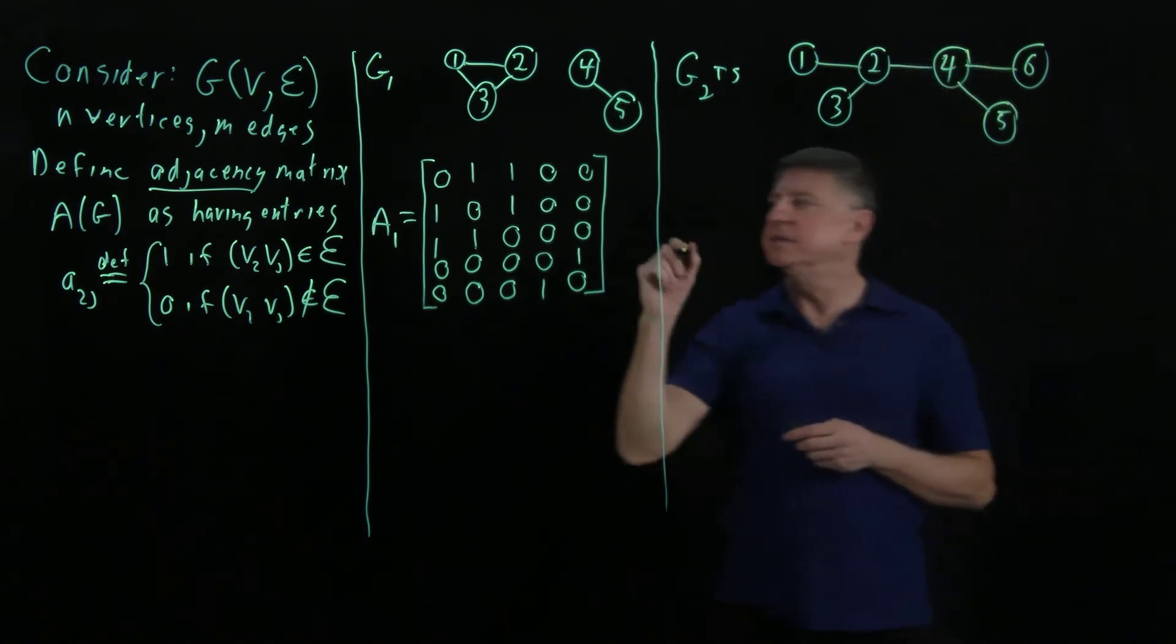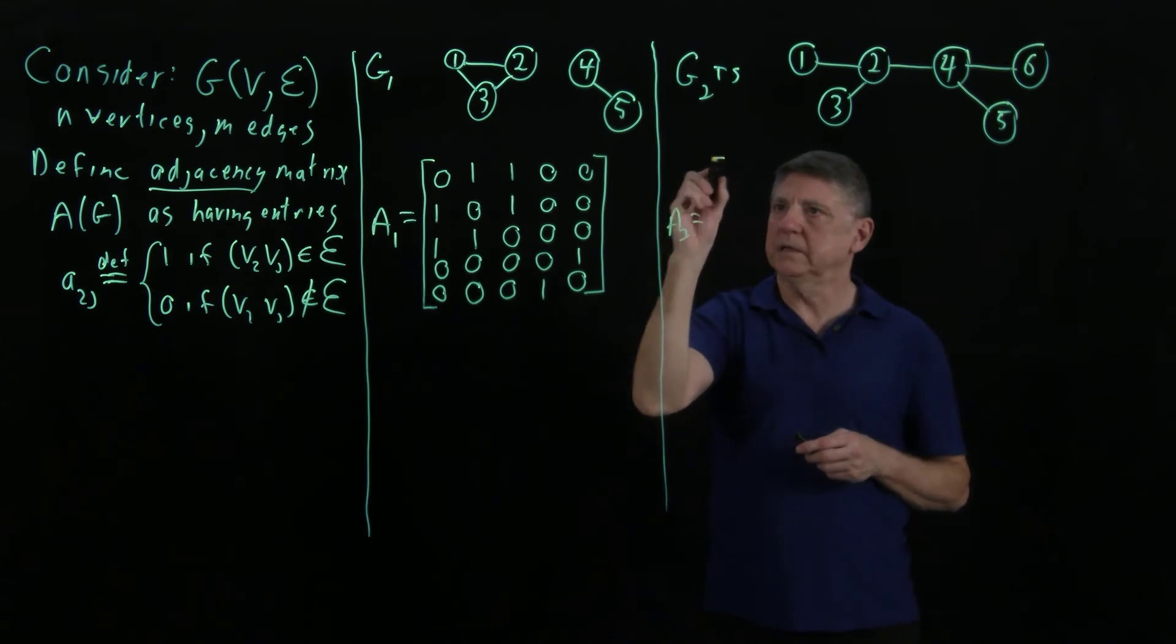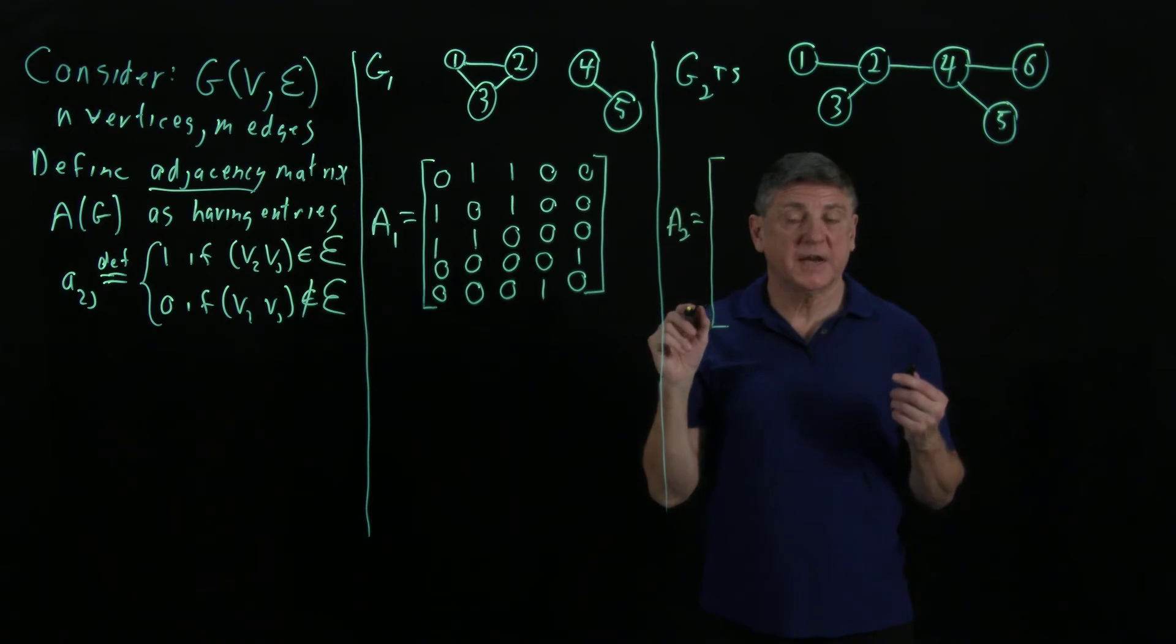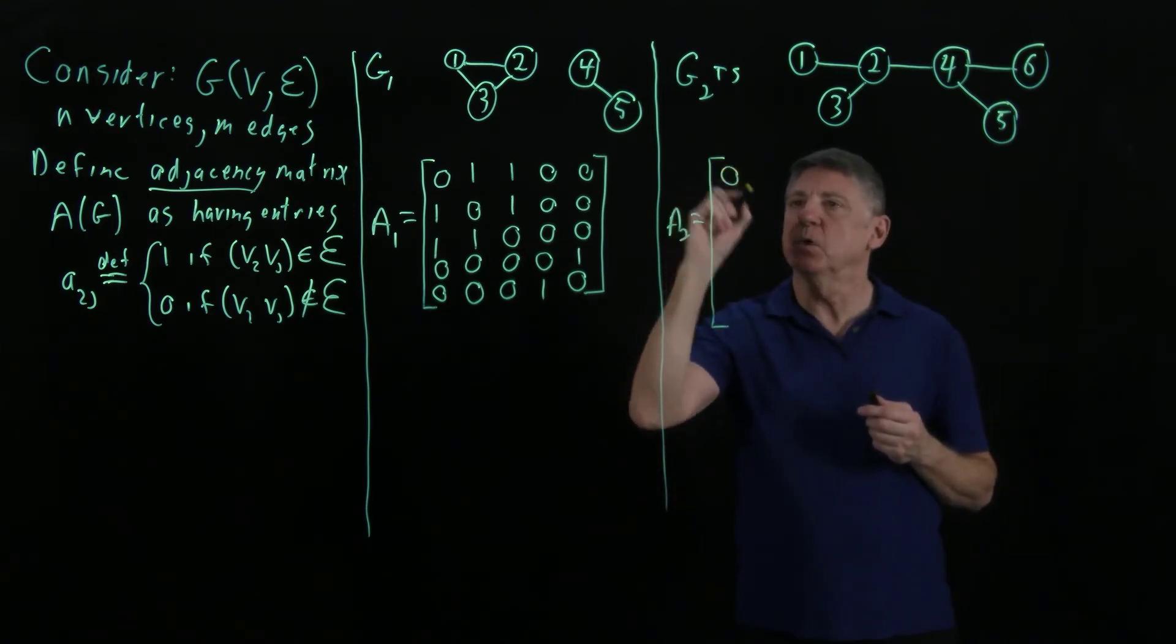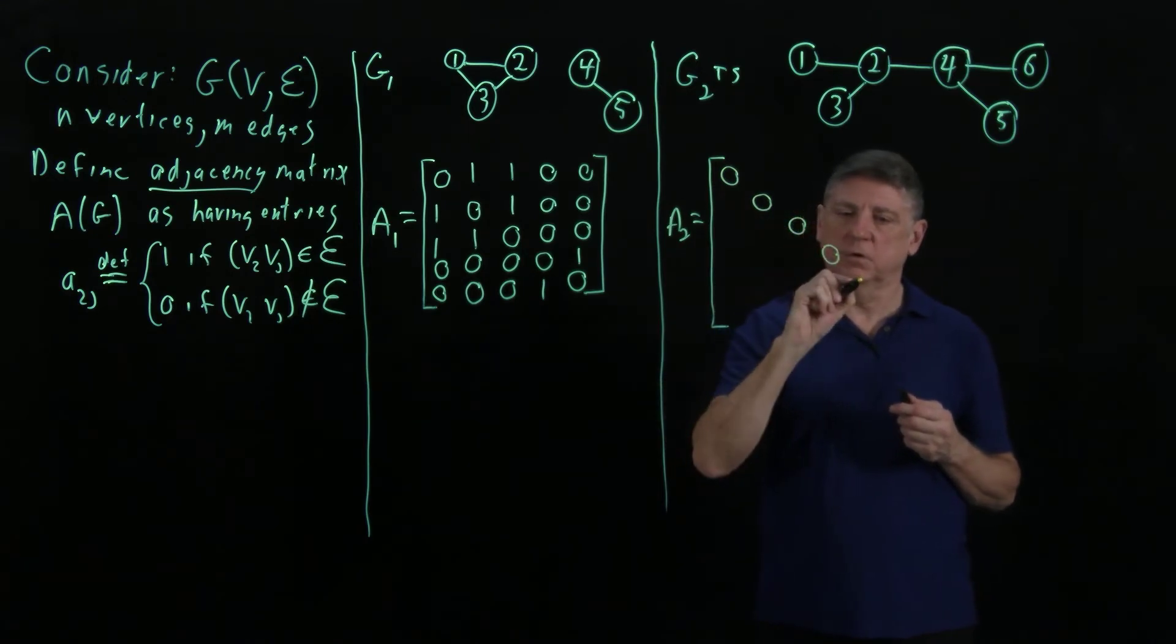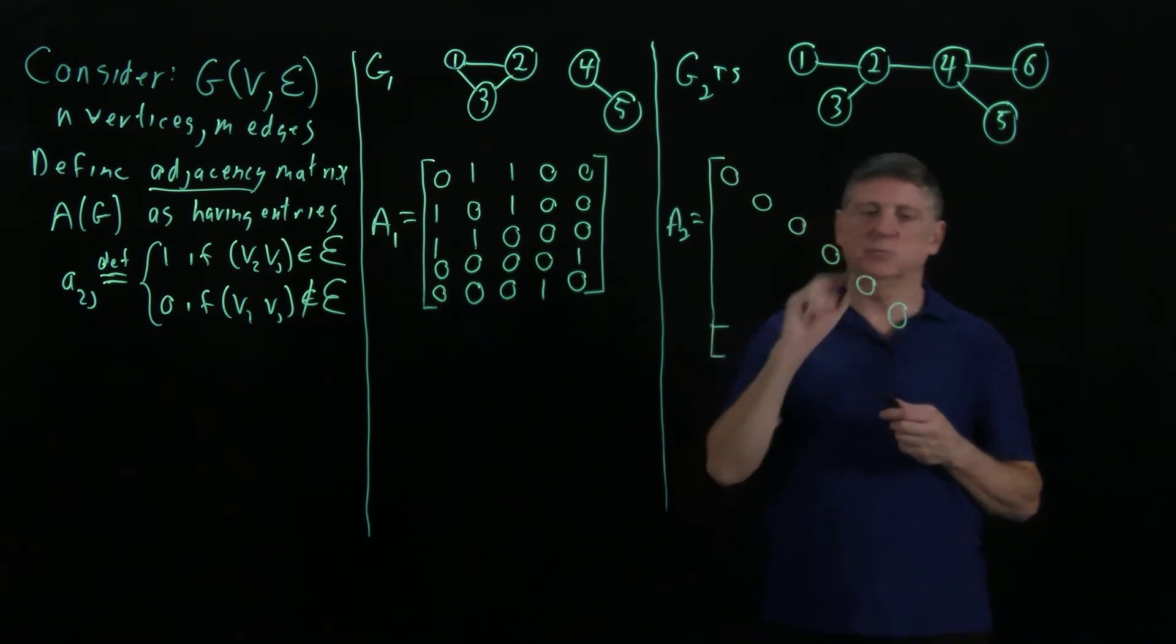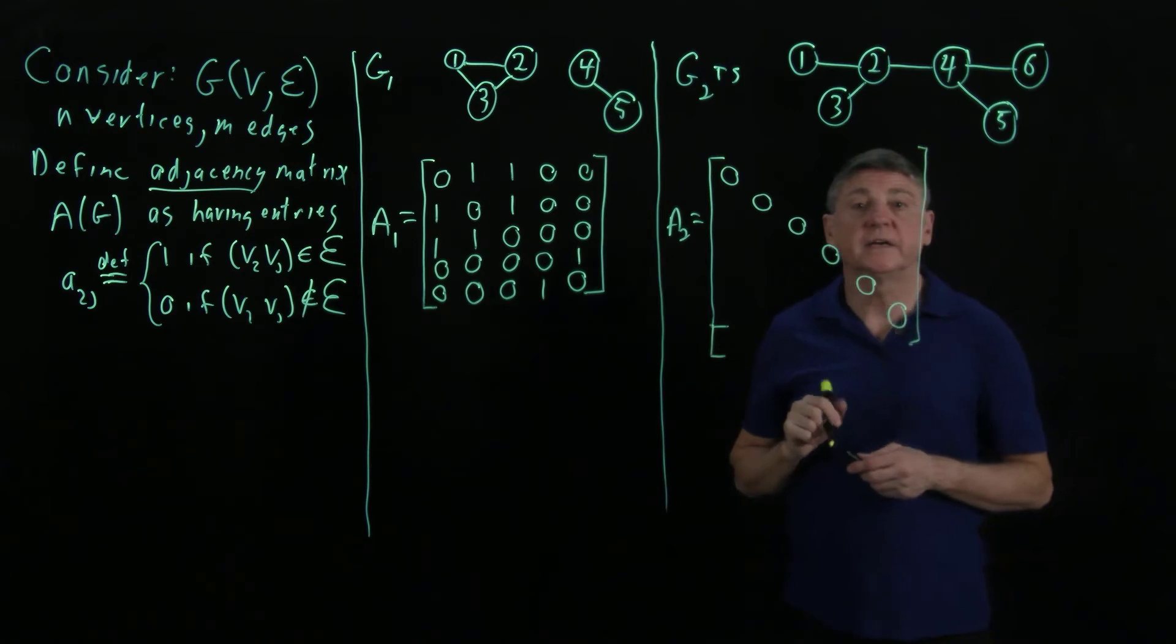And now the adjacency matrix A2 will be, this will be a little bit larger. And we can immediately fill out the diagonals because no vertex is connected to itself. So that'll be 1, 2, 3, 4, 5, 6 by 6. We need a little more space there. And now we're ready to begin.